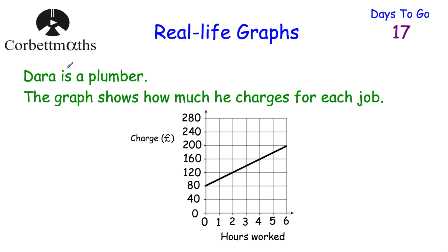Here we've got a graph. Dara is a plumber, and the graph shows how much he charges for each job. A job that lasts zero hours - that must be like a set call-out fee - is £80. If it's one hour, it's £100. If it's two hours, it's £120. If it's three hours, it's £140. If it's four hours, it's £160 and so on. This graph shows us how much Dara charges for each of his plumbing jobs.